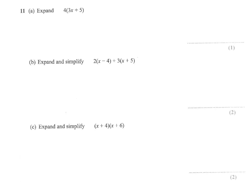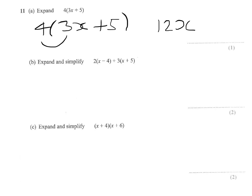Question 11 involves expanding and simplifying. I'll start off with the easiest one: 4 lots of 3x plus 5. What we need to do here is multiply 4 times 3x, which gives me 12x. But it's 4 lots of 3x plus 5, so we must also do 4 lots of 5, which is 20.